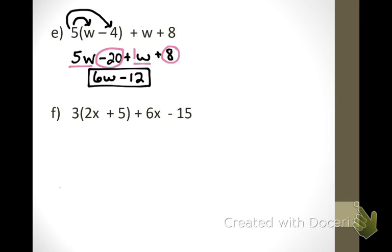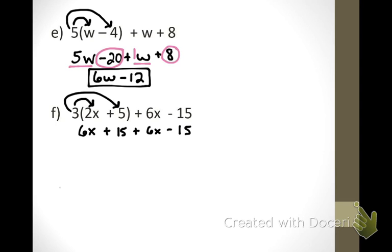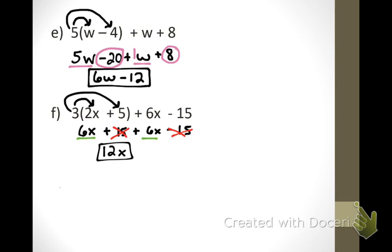Another distributive property problem: the 3 is outside the parentheses, so multiply 3 by everything inside. 3 times 2x equals 6x. Bring down the plus sign, and 3 times 5 equals 15. Now bring everything else down and combine like terms. 6x plus another 6x. For the constants: 15 and negative 15 equal zero, so cross those out. 6x plus 6x equals 12x, and that is as simple as it can get.